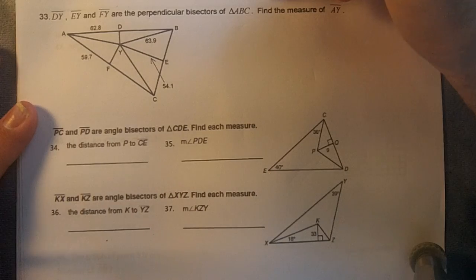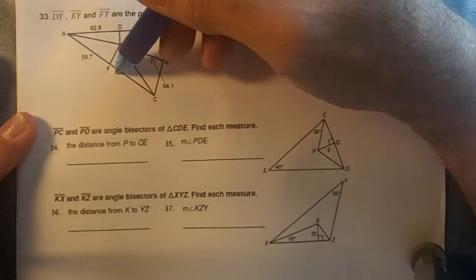DY, EY, and FY are perpendicular bisectors of triangle ABC.